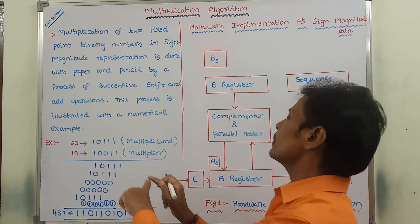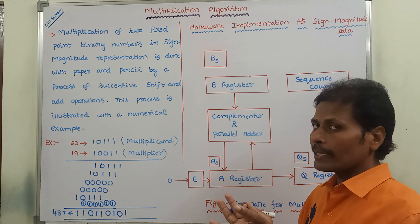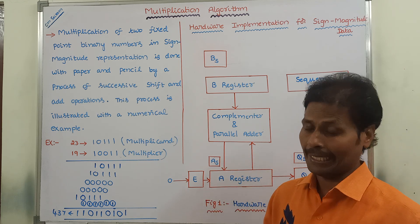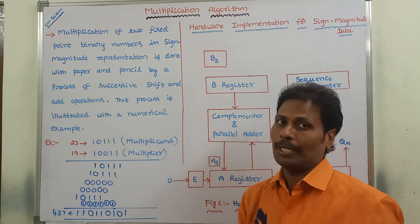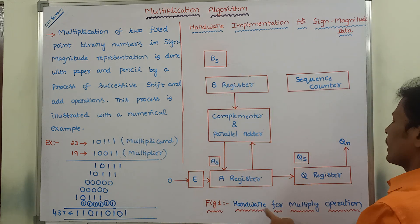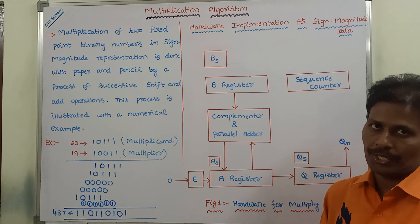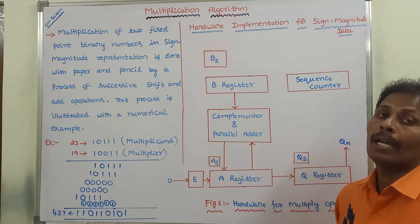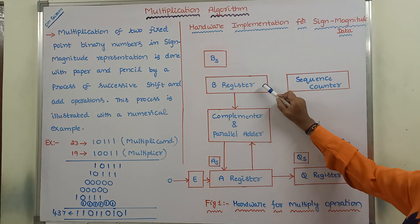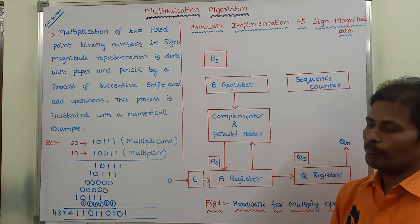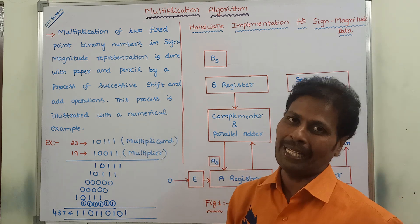But how can this multiplication be done in the computer? What hardware implementation is required for performing this multiplication? This is the hardware required for the multiplication operation. Here we have to use three registers. The first register is called the B register.